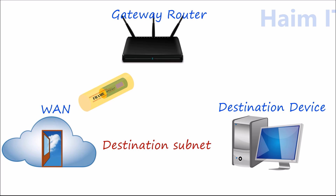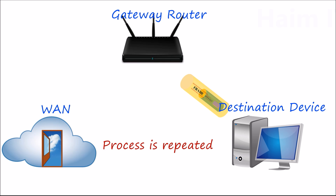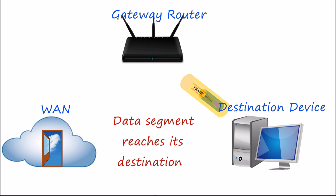After reaching the gateway router for its destination subnet, the packet will once again be removed from its frame and placed into a new frame containing the MAC address for the intended device.